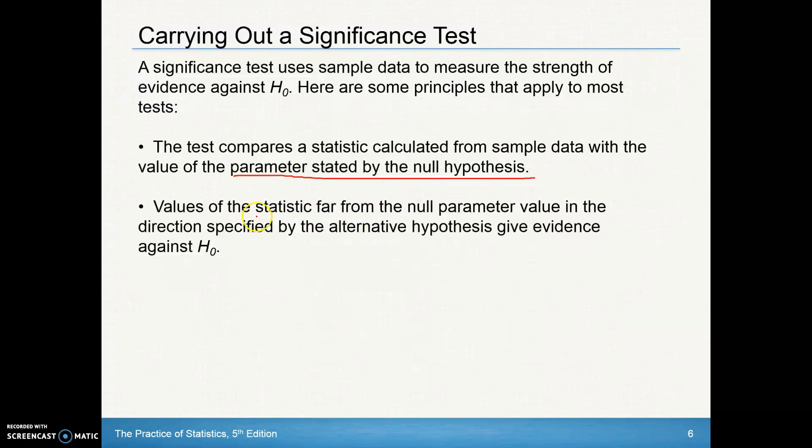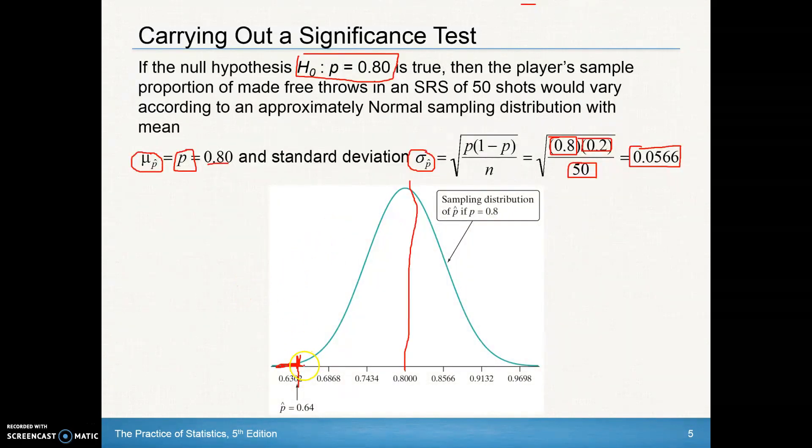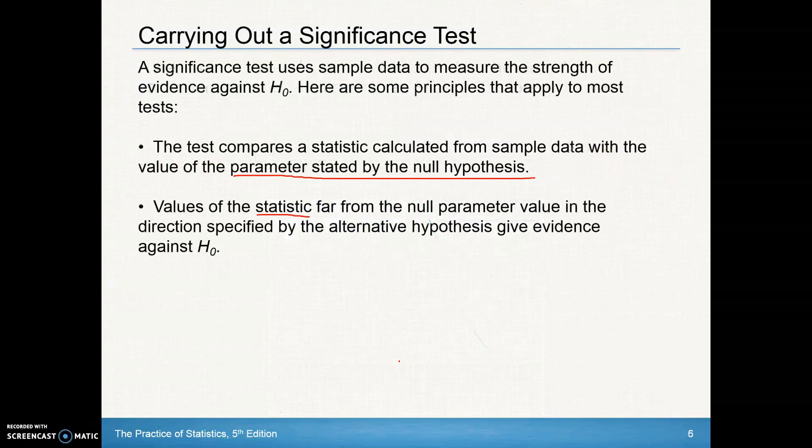Values of the statistic, so in other words, values of our sample that are far from the null in the direction specified by the alternative hypothesis give evidence against this. In other words, again, if we've got values that are far from, if you go back to this slide, our value right down here, it looks like it's far from that proposed null hypothesis. If you have that, that gives pretty good evidence against that null.